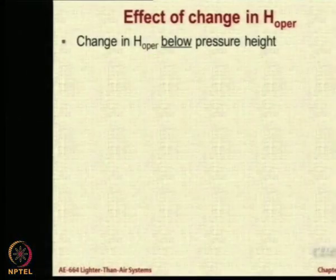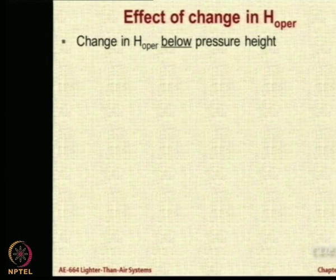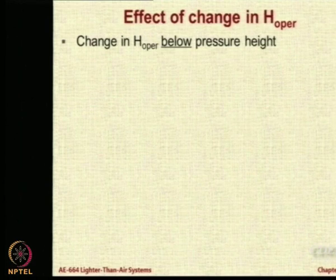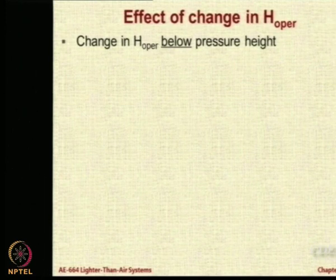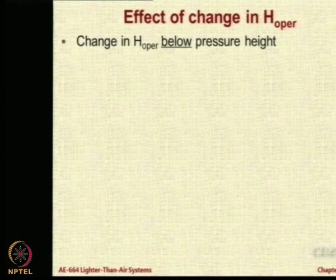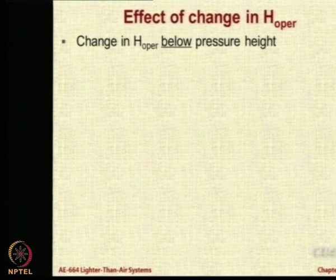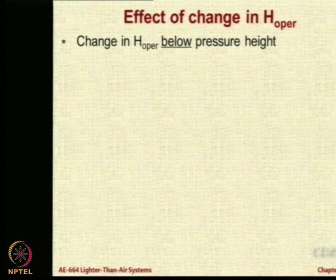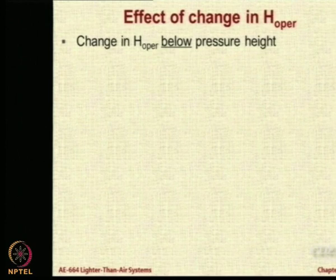Let us see the effect of change. We will look at two scenarios now. One scenario is the airship operating from some altitude to an altitude which is below the pressure altitude. Let us say the pressure altitude is 1500 meters. You are operating from 500 meters to 600 meters — the airship changes altitude from 500 meters to 600 meters.